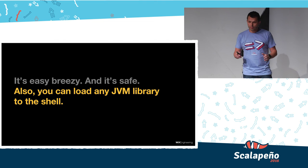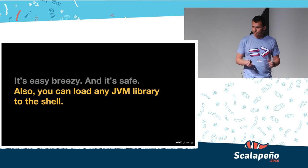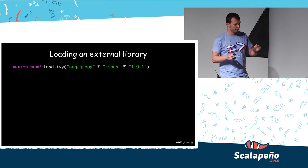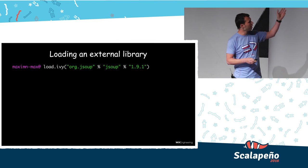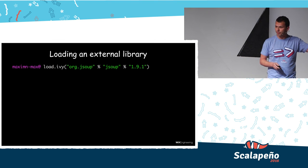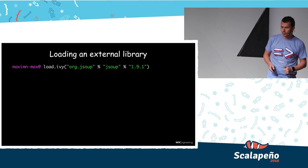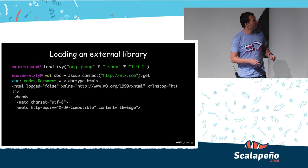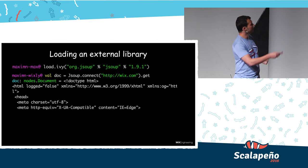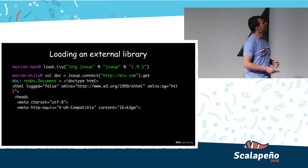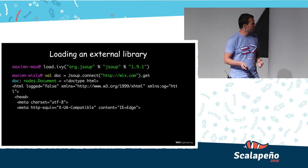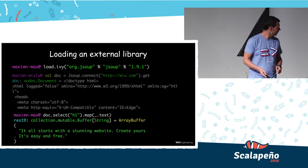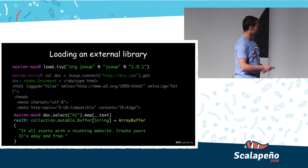In addition to all these goodies, you can load any JVM library into your shell without SBT or any other tools — just from your shell or script, do load.ivy with the SBT-like identifier for the library, and you can start using it right away. In this example I'm loading JSoup. Here I'm fetching the Wix.com website, and the result — as you can see — is a document, not a string, so I can work with it. Now I can select the header, and as you can all see, it starts with: 'A stunning website. Create yours. It's easy and free.'